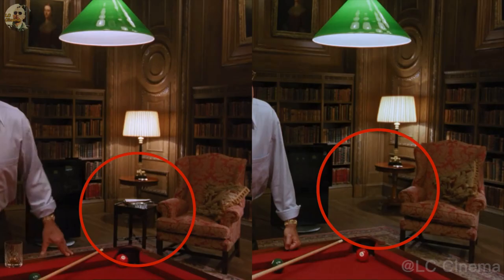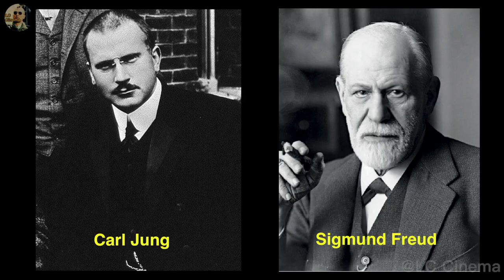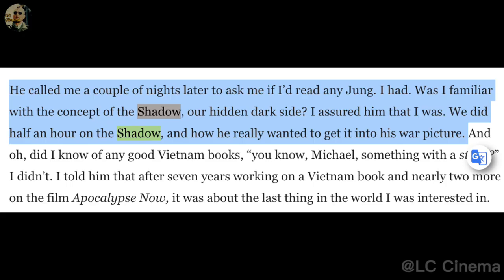I think Kubrick wants to create a dream through continuity errors. Because the things in a dream come from real life, but the dream does not conform to the logic of reality, so things will appear and disappear. And things that appear in reality will also appear in dreams. To analyze the dream, we need to use Carl Jung's theory and Freud's theory.